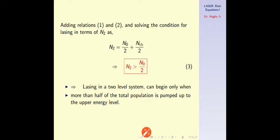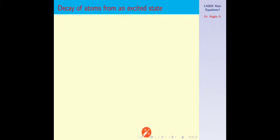Lasing in a 2-level system can begin only when more than half of the total population is pumped up to the upper energy level; otherwise there is no lasing. Now, we will use a simple system in which we consider only the decay of atoms from an excited state — one ground state and one excited state. Let us assume that a large number of atoms are already in the excited state. When you turn off the pumping source, the atoms undergo decay from the higher level to the lower level.